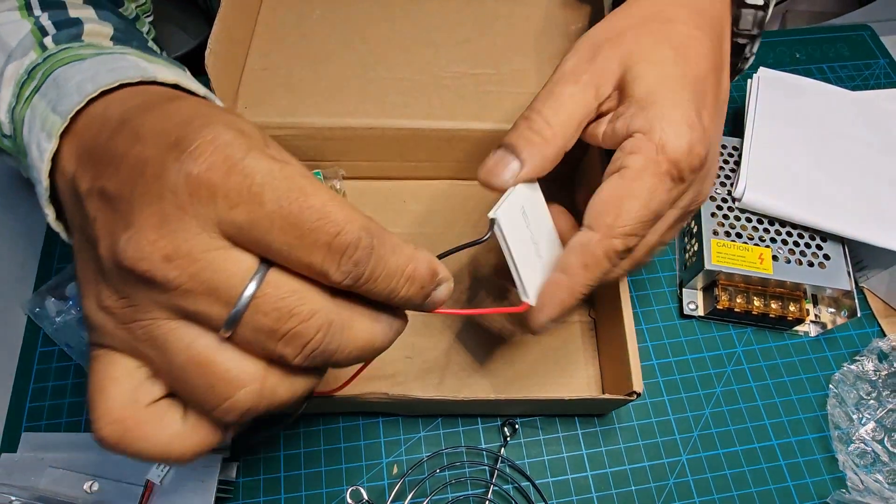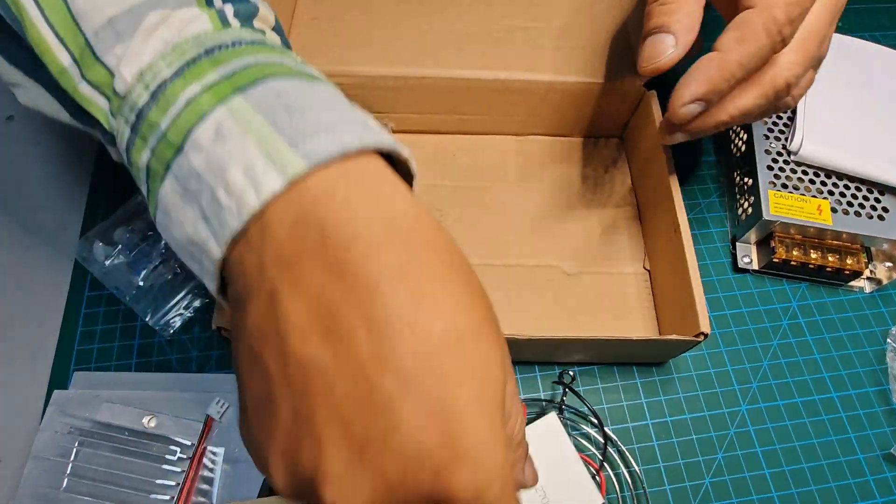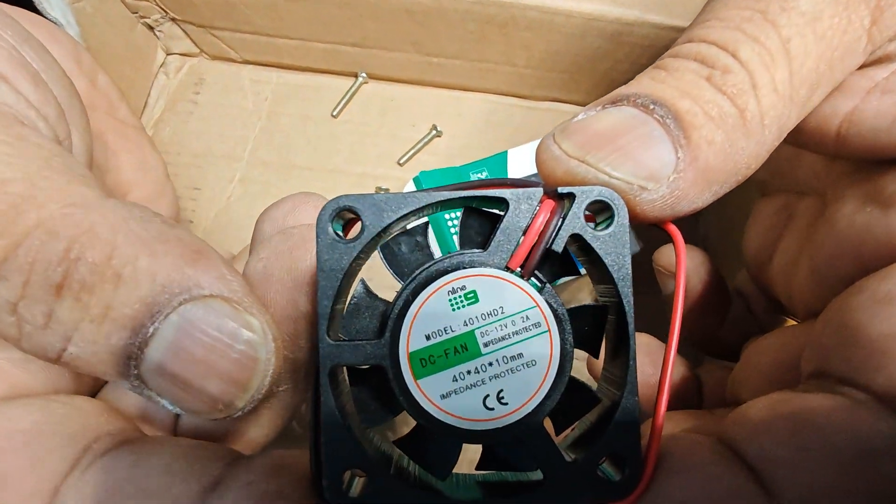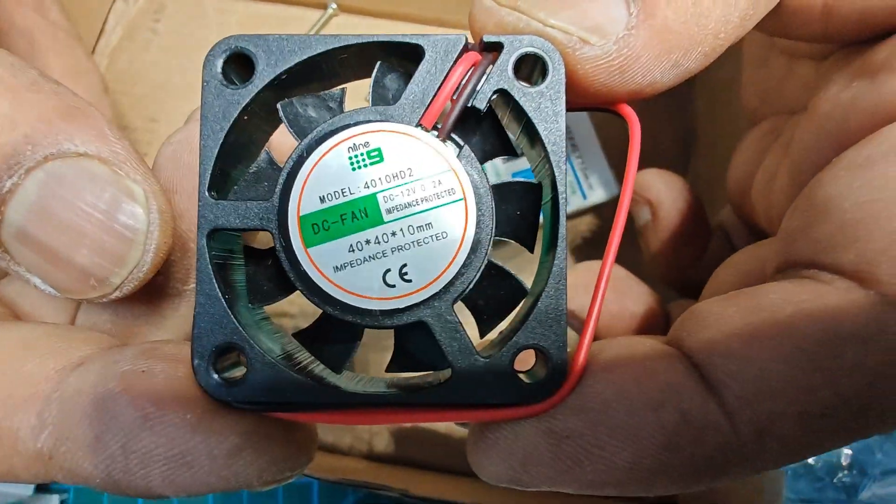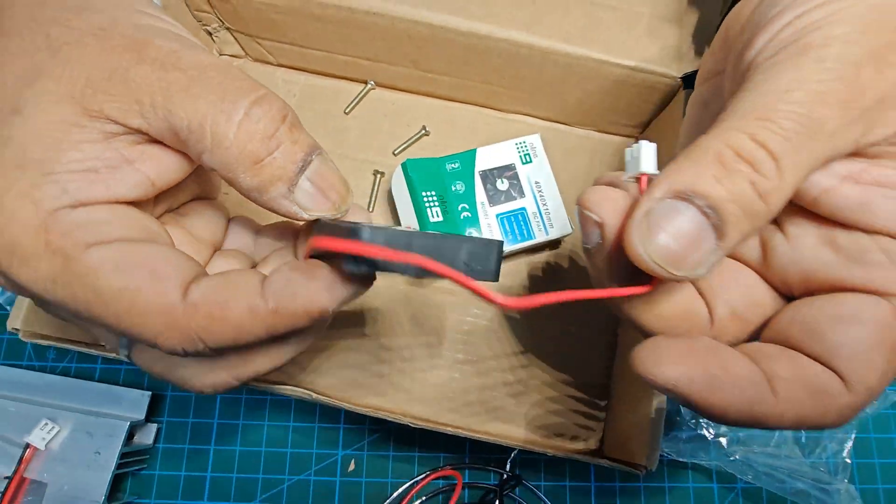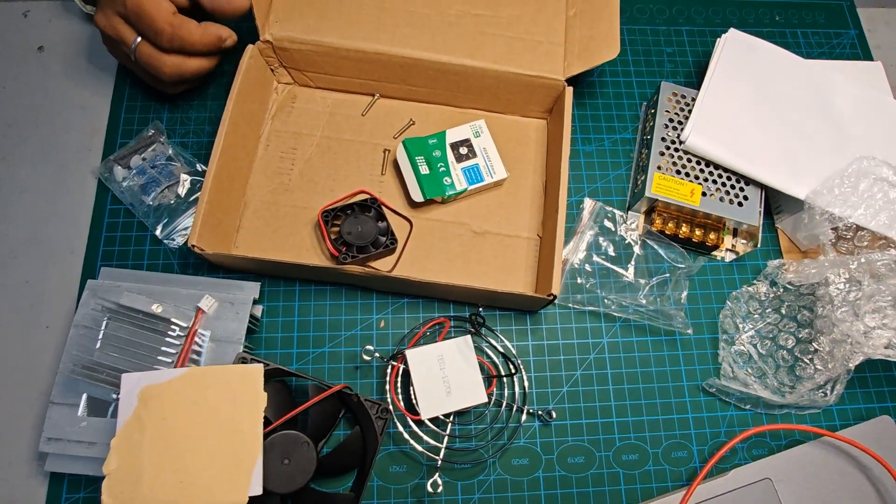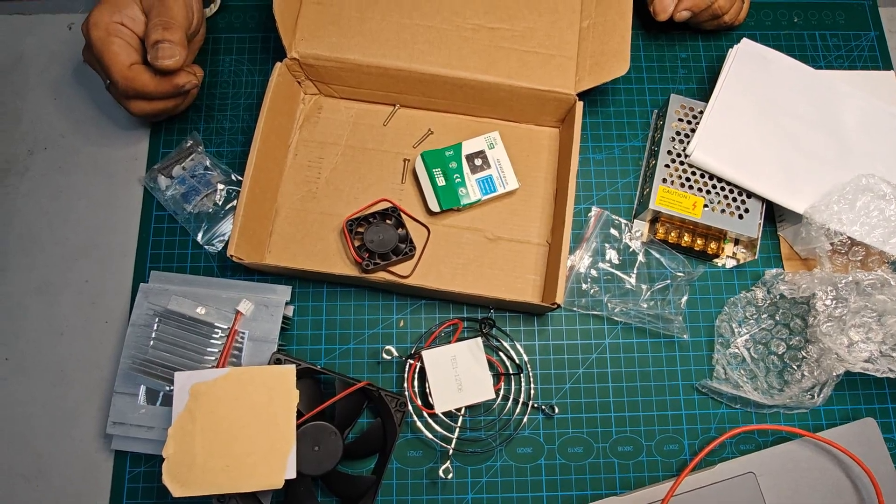And a small fan to release the cool air to the atmosphere. It is 12 volt and 100 milliamp power consumption. So my dear friend, without wasting time, let us start assembling our new Peltier kit.